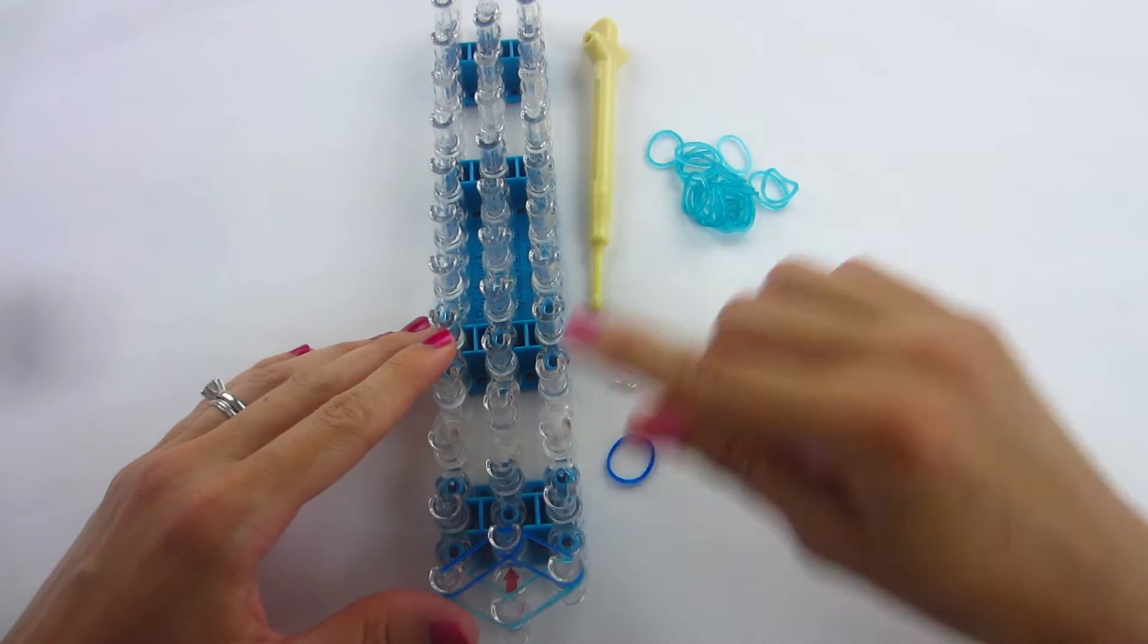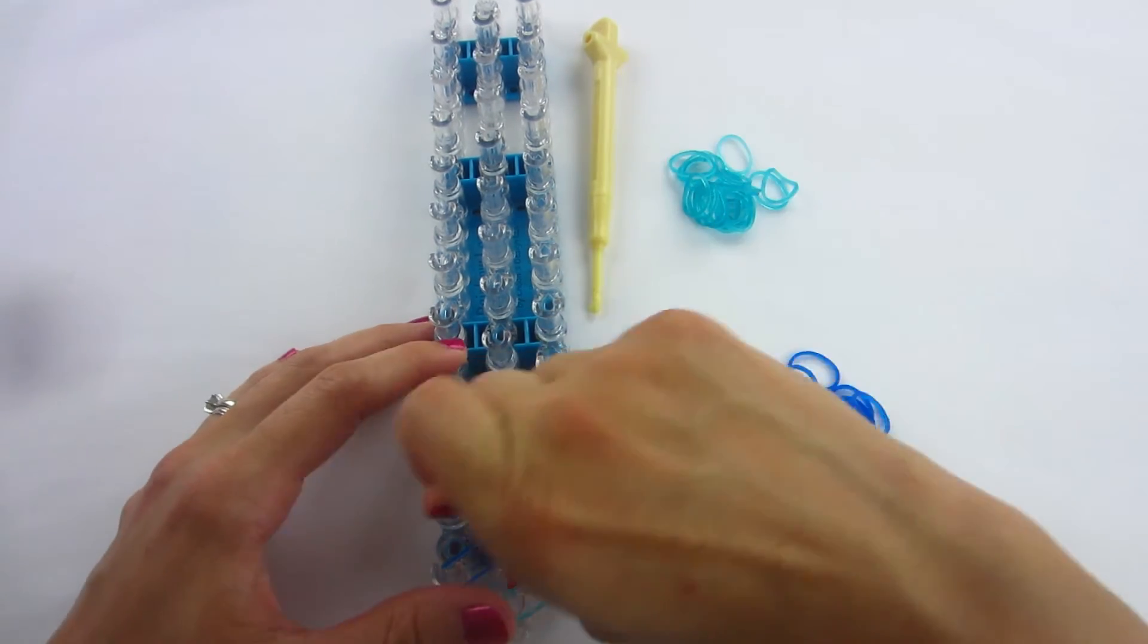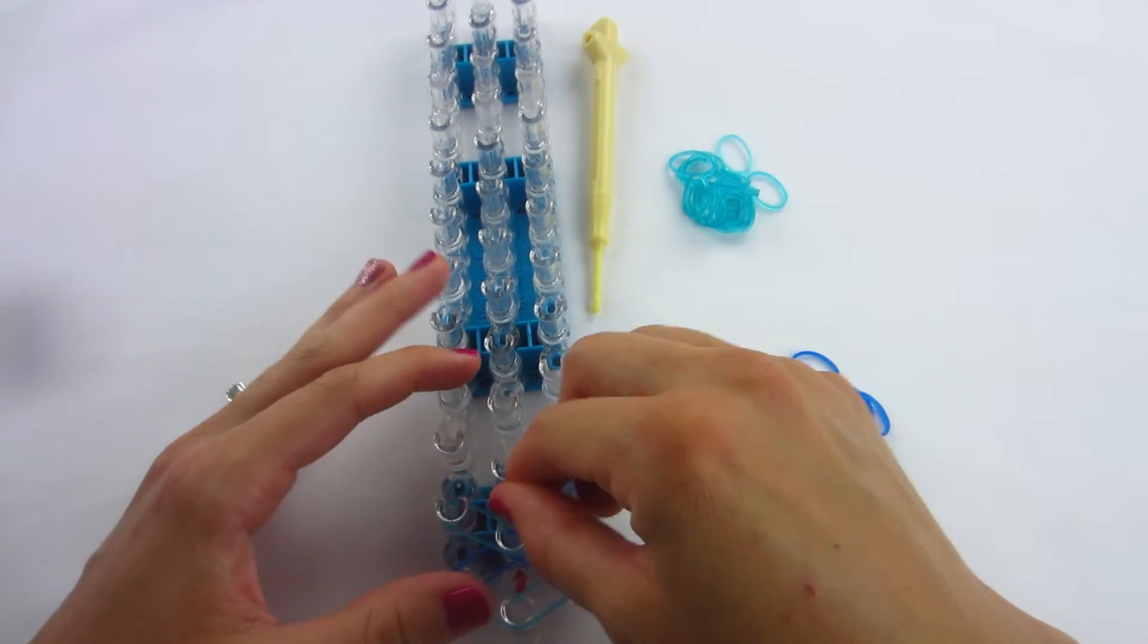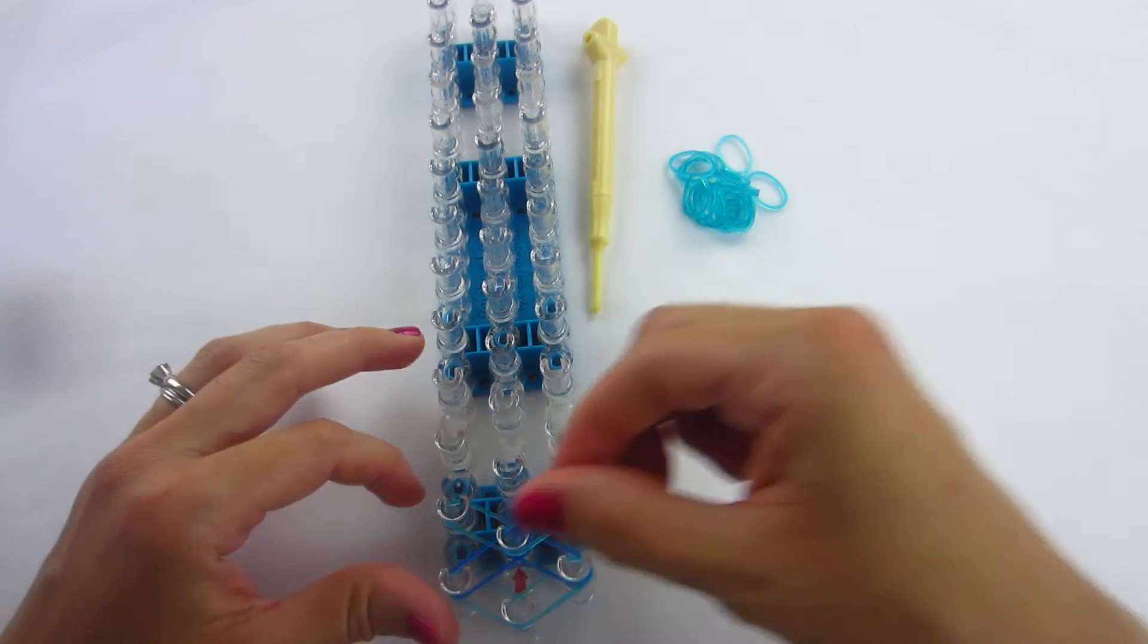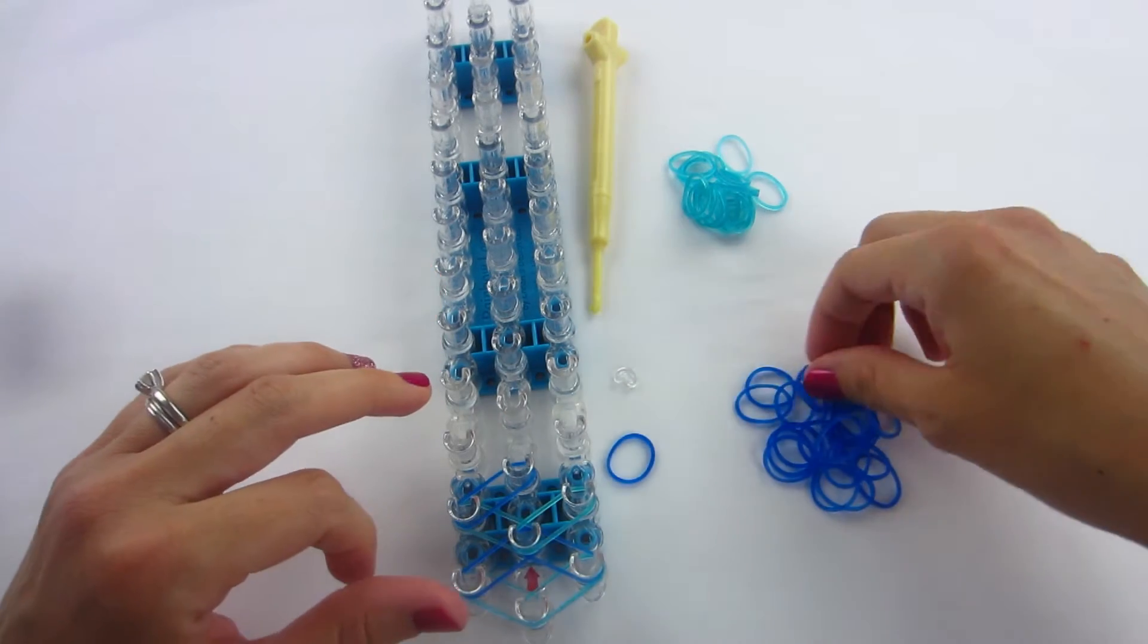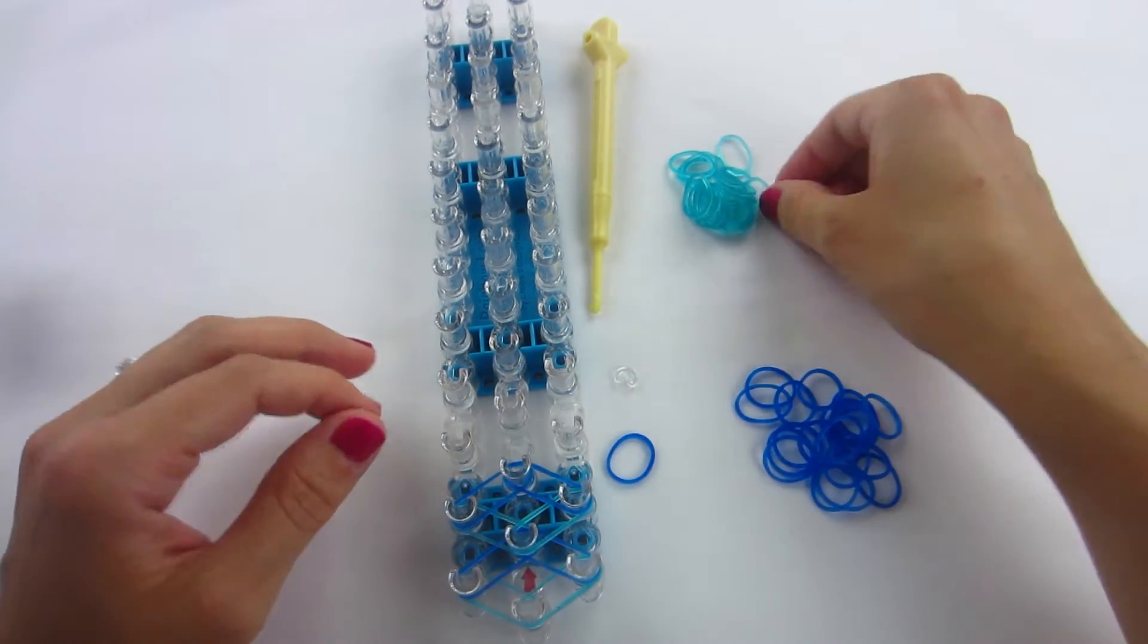Now we are going to be doing this same design all the way up our loom, ending on one aqua band at the very end. So all your aqua bands are going to be going from the center out to the sides, and then your blue bands are going to be going back into the center. Make sure you push your bands down as you do this and fill up your loom.